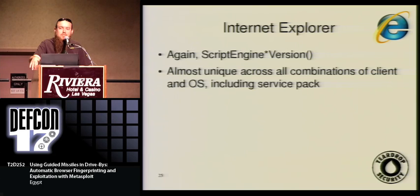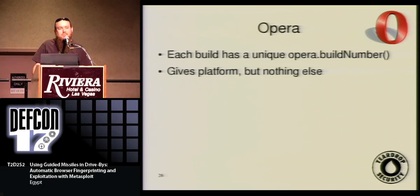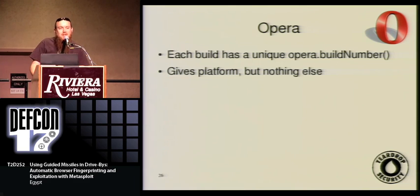Windows Server 2003 is sort of an outlier — it has a couple of overlaps with XP, so I can't always tell the difference between 2003 and XP, but the service pack levels are the same, so it's okay. Opera doesn't give us anything awesome, but it does give us opera.buildNumber, which is basically unique amongst operating systems. It doesn't give us the version or service pack level, but it gives us the platform, and that's enough to tell us with a certain degree of likelihood that the user agent is not lying.